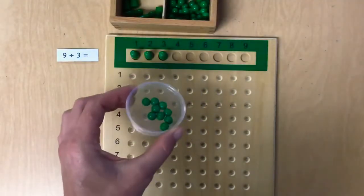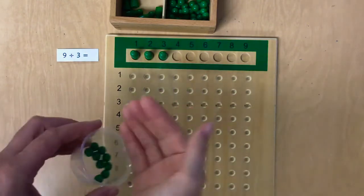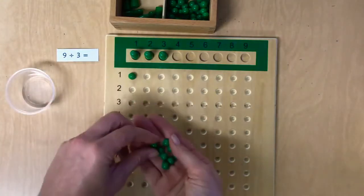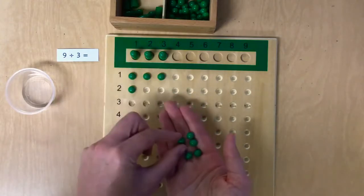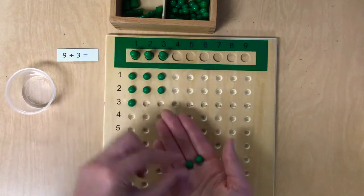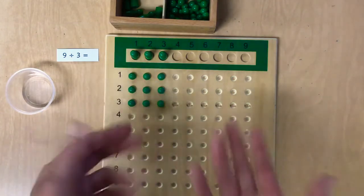Do you remember what we do with the green beads? Yeah, we make sure each one gets an equal amount. So let's do that. One for this guy, one for this one, and one for this one. Let's keep going until they're gone. One for you, one for you, and one for you. One for you, one for you, and one for you. All right, they're all gone.